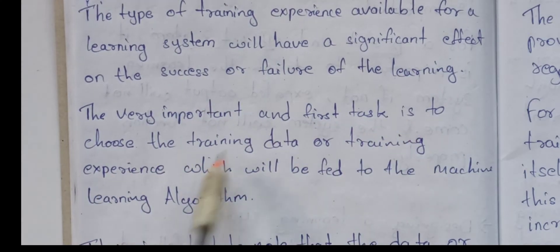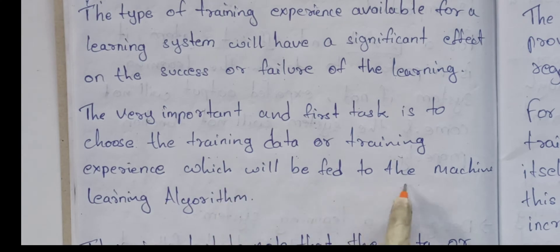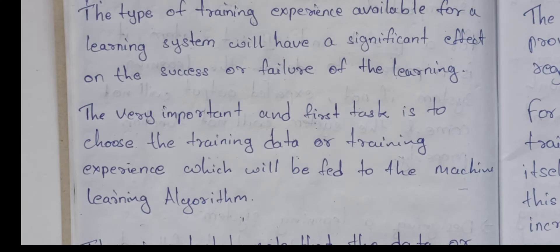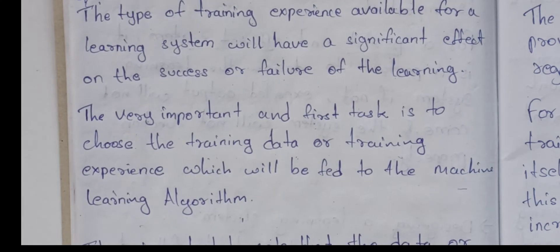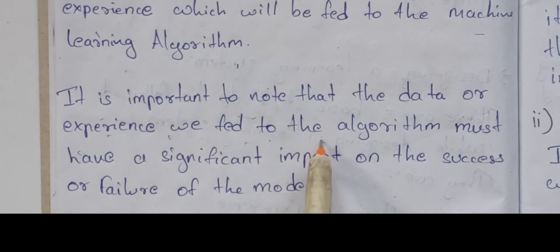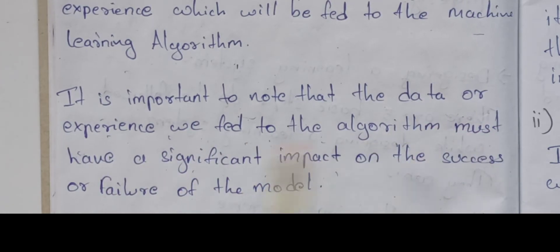The very important first task is to choose the training data or training experience which will be fed to the machine learning algorithm. It is important to know that the data or experience we feed to the algorithm must have a significant impact on the success or failure of the model.